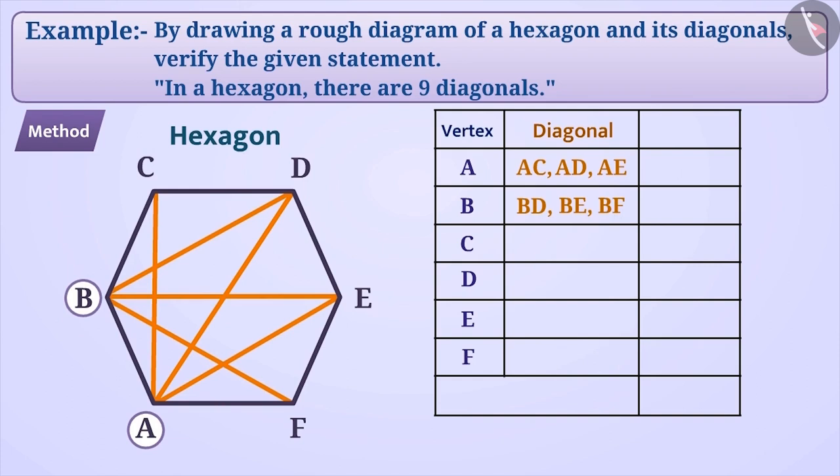From the vertex C, diagonal CA has already been drawn. So, we will need to draw only 2 diagonals. So, we will draw 2 diagonals CE and CF. Now, we have drawn all the 3 diagonals from C.